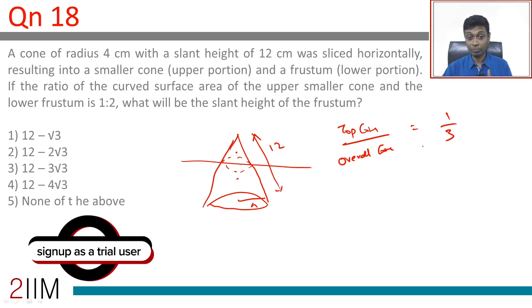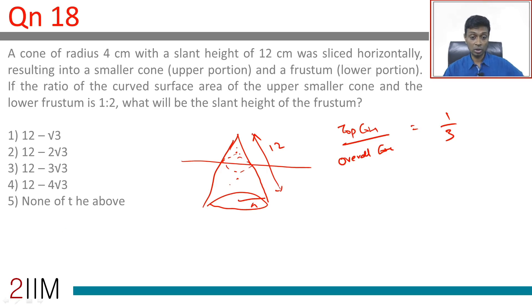Because it's only curved surface area, we don't include the small circle that's there. You have a curved surface around this and curved surface around this. The area of this curved surface plus the area of this curved surface are in the ratio 1:2, or curved surface of top cone to overall cone is 1:3.